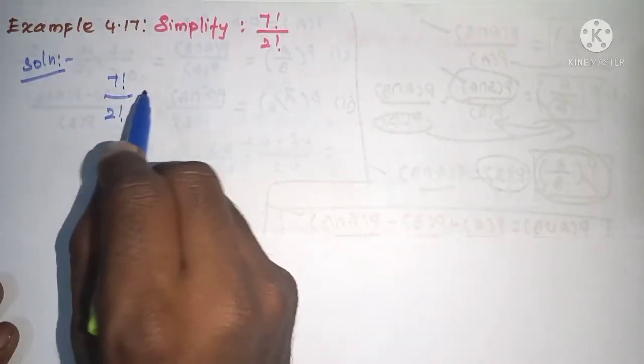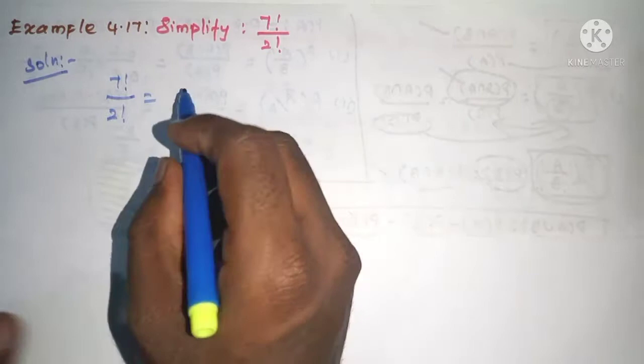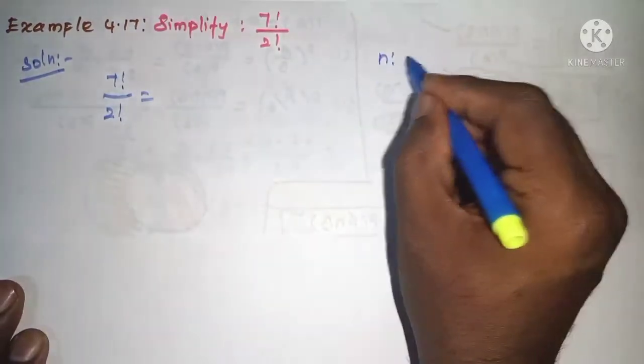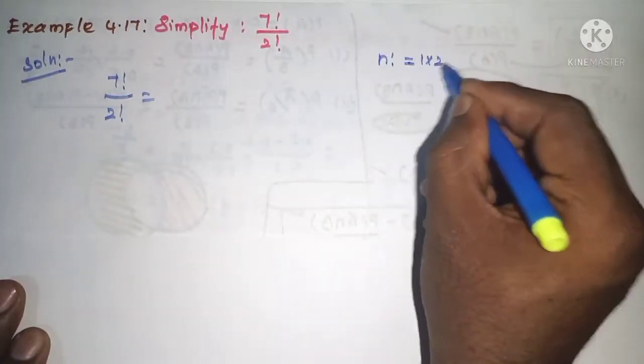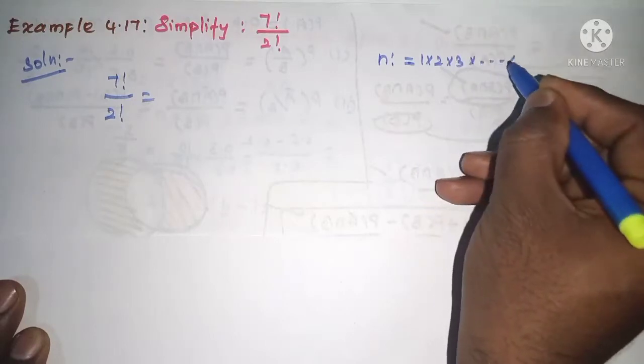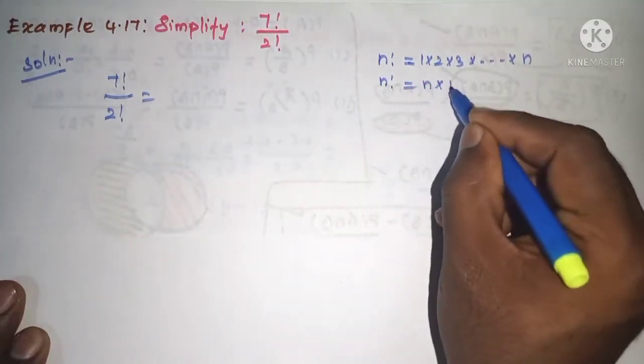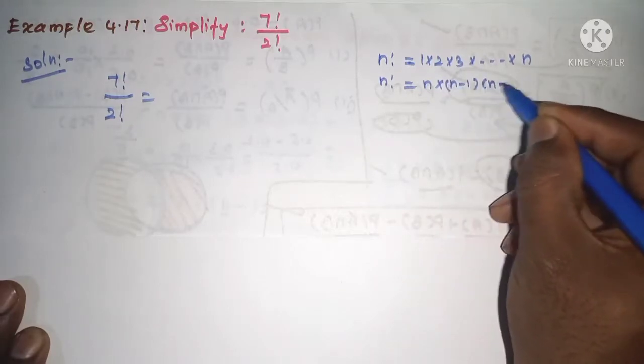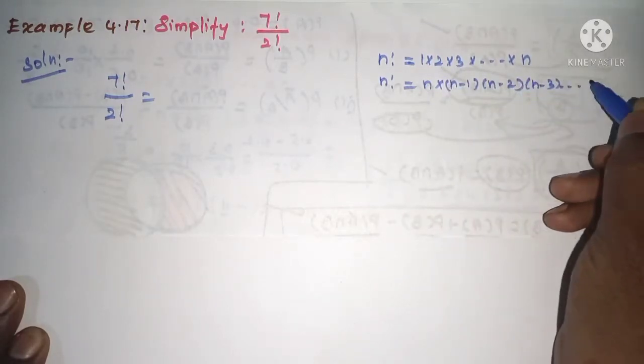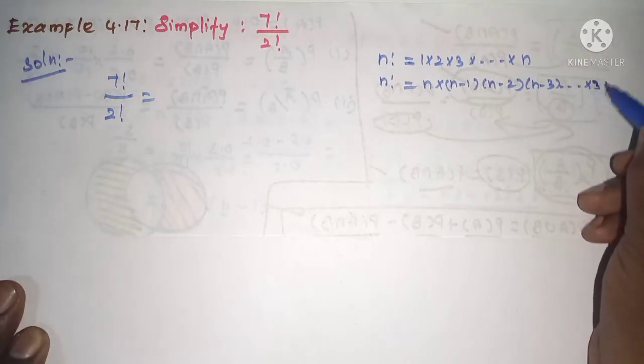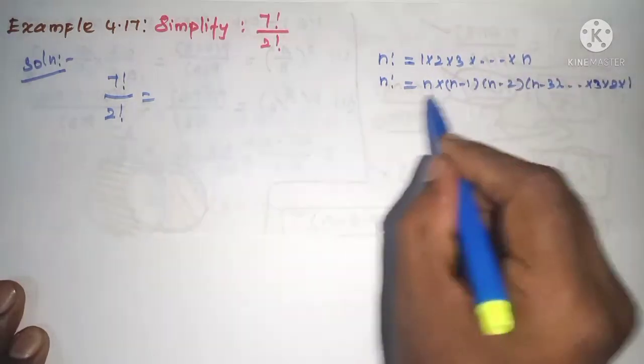7 factorial - see, n factorial is equal to 1 into 2 into 3 into up to n. So the reverse order is equal to n into (n minus 1) into (n minus 2) into (n minus 3) up to into 3 into 2 into 1.